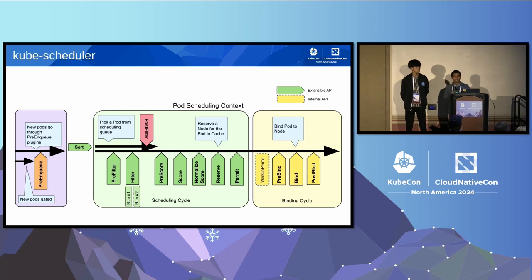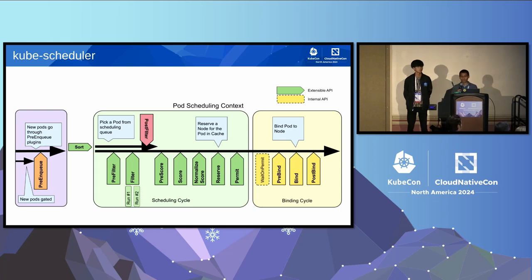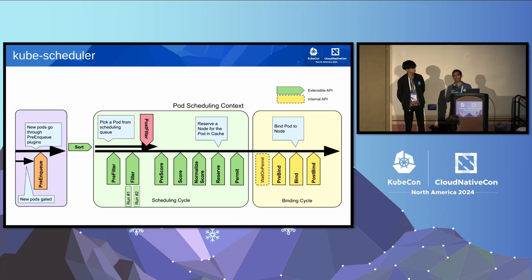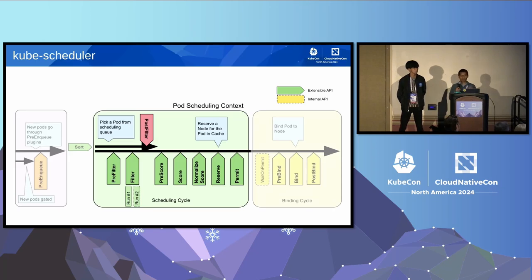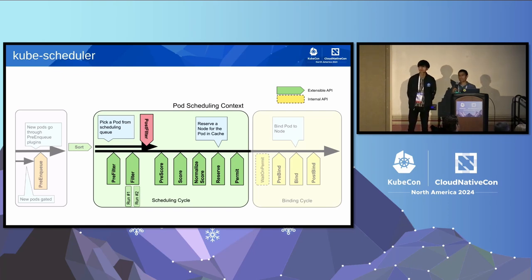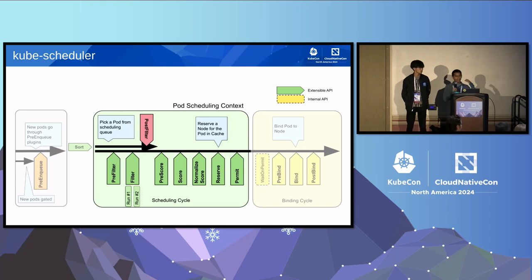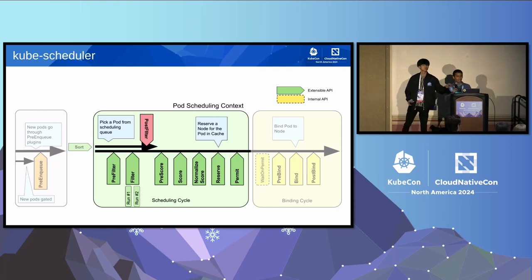We'll start with the Scheduler. Kube Scheduler is the component that makes the decision about which node each pod should run in, based on a number of properties like the pod spec, the node properties, and the utilization of these nodes. This is the overall picture of how the scheduling looks like internally, roughly divided into two or three stages depending on how you count.